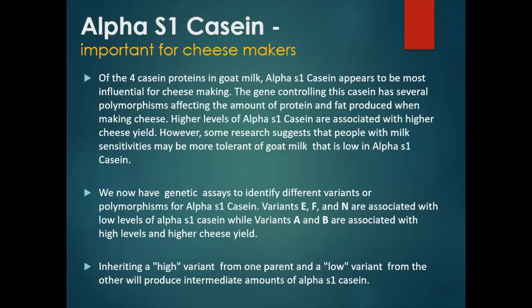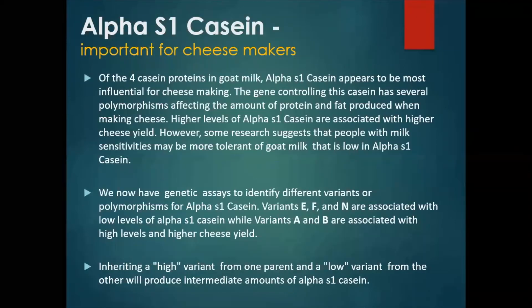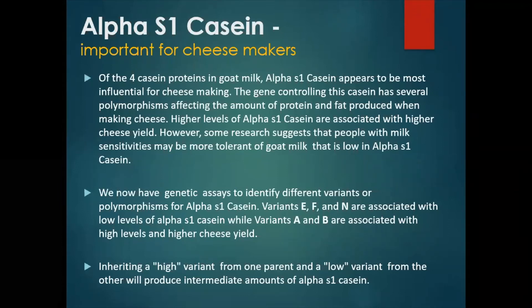We now have genetic assays to identify different variants or polymorphisms for alpha S1 casein. Variants E, F, and N are associated with low levels of alpha S1 casein — so possibly more tolerance to goat milk — while variants A and B are associated with higher levels and hence higher cheese yield. Inheriting a high variant from one parent and a low variant from the other parent will produce intermediate amounts of alpha S1 casein.